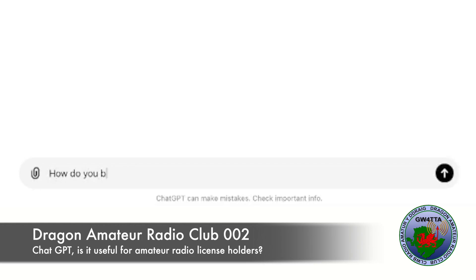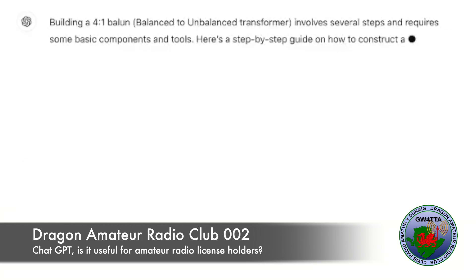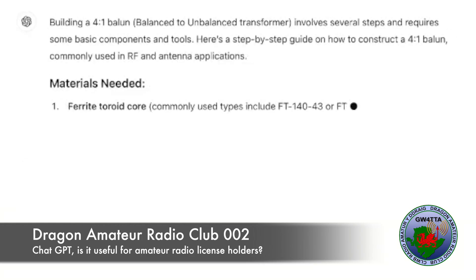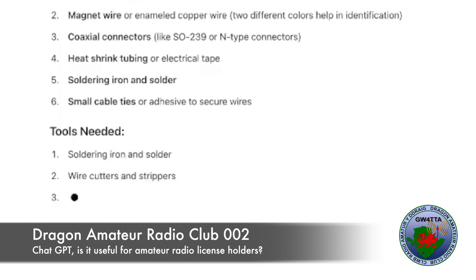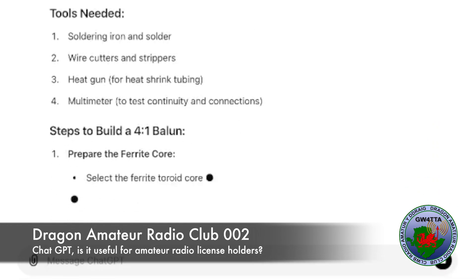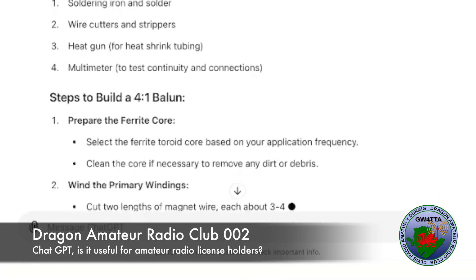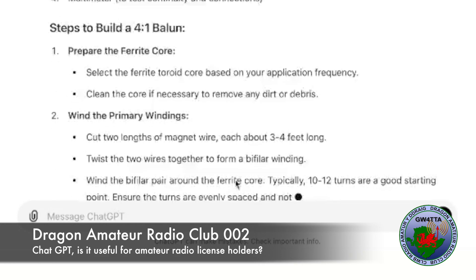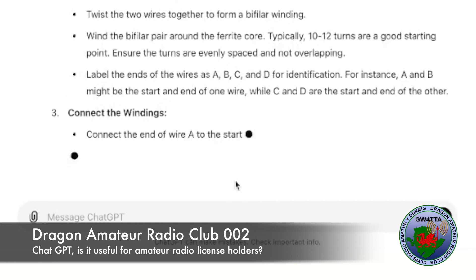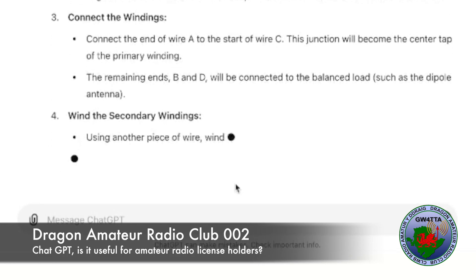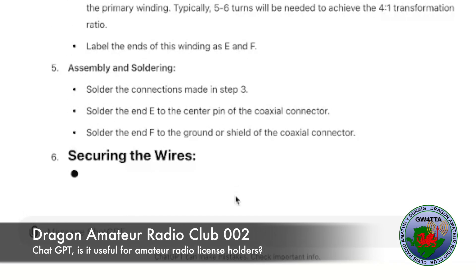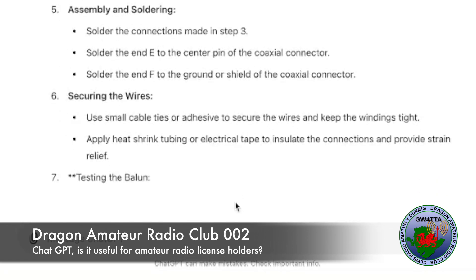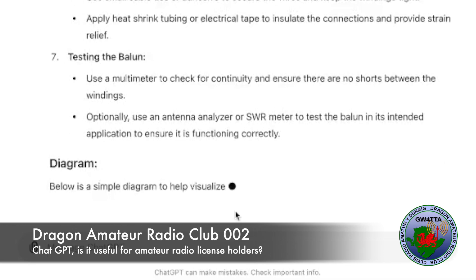What about if you want to build a 4 to 1 balun? Well, building a 4 to 1 balun — it gives you all the information you need: the materials required, what tools you need, the steps to go through, all about the primary windings, how to connect the windings, winding the secondary windings, assembly and soldering, securing the wires, testing the balun, and it gives you a diagram.